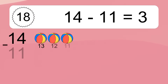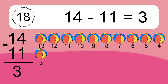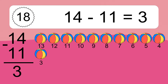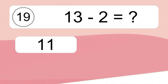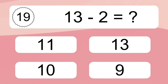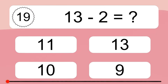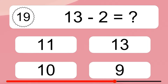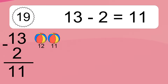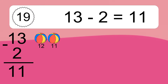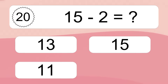14 minus 11 equals what? 14 minus 11 equals 3. Let's count it. 13, 12, 11, 10, 9, 8, 7, 6, 5, 4, 3. 13 minus 2 equals what? 13 minus 2 equals 11. Let's count it. 12, 11. 15 minus 2 equals what?